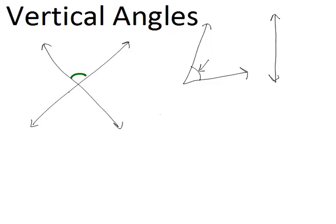In this picture, this would be one pair of vertical angles. You can see they're on top of each other, like a vertical line. And this would be another pair of vertical angles.